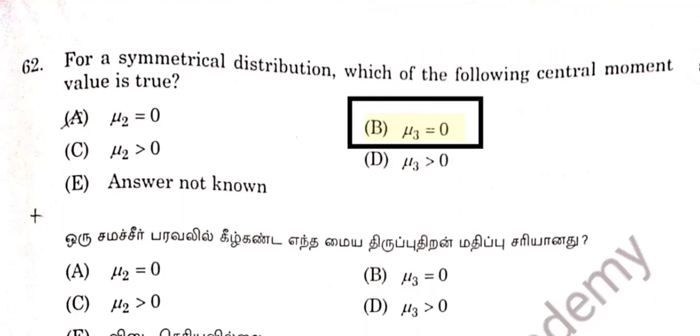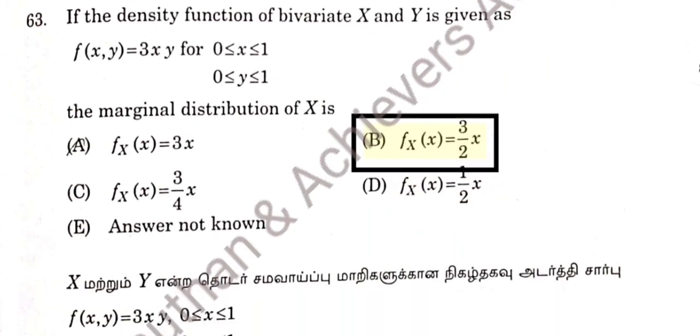Question 61 refers to SRSWR — Simple Random Sampling Without Replacement. Question 62: For symmetrical distribution, if the odd moments are zero, mu3 equal to 0. 62 option B is correct answer.